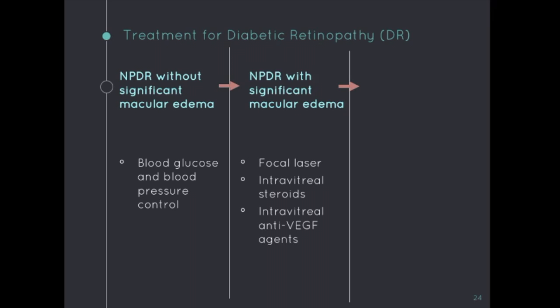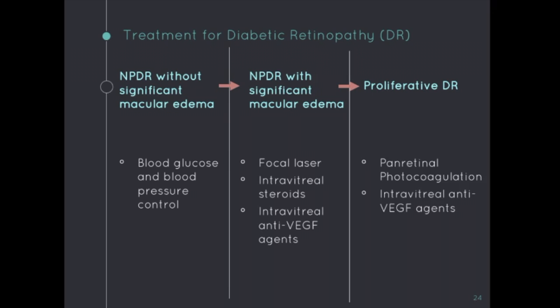If a diagnosis of proliferative DR is made, there are various options to directly treat, including laser therapy — also called panretinal photocoagulation — anti-VEGF injections, and vitrectomy.